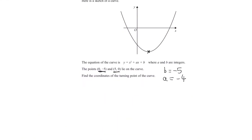Now that we've found what a and b are equal to, we can rewrite the equation of the curve. So we have y is equal to x squared minus 4x minus 5. And now we want to find the coordinates of the turning point, so we're going to complete the square on this.